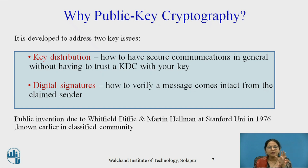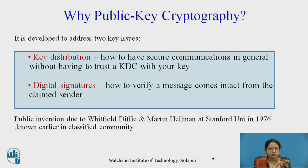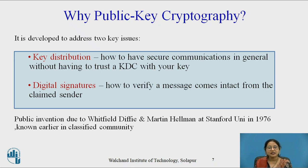Why public key cryptography? It complements private key cryptography by addressing two key issues: key distribution and digital signature. For key distribution, the issue is how to achieve secure communication without having to trust a key distribution center with your key. For digital signatures, it addresses how to verify that a message actually comes from the claimed sender. These two issues are addressed with public key cryptosystem, whose public invention is due to Diffie and Hellman at Stanford University in 1976.